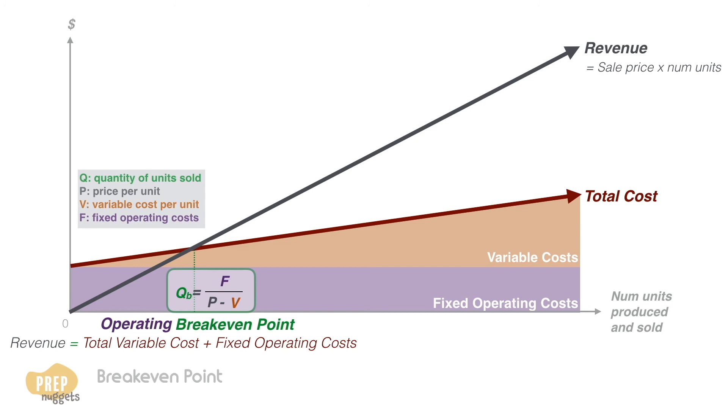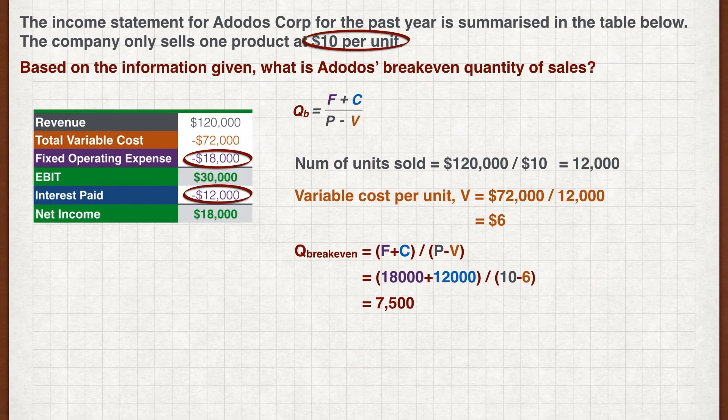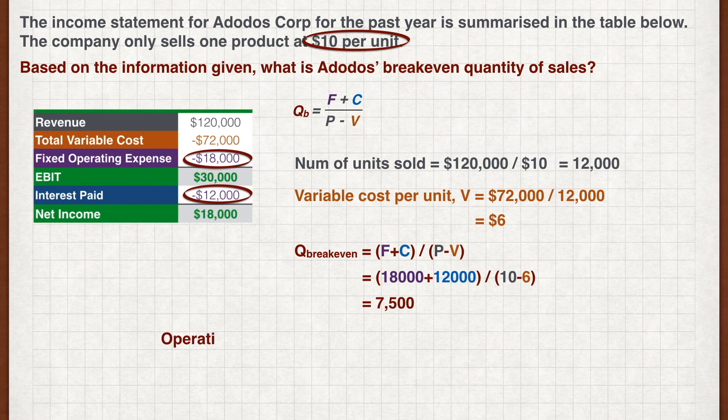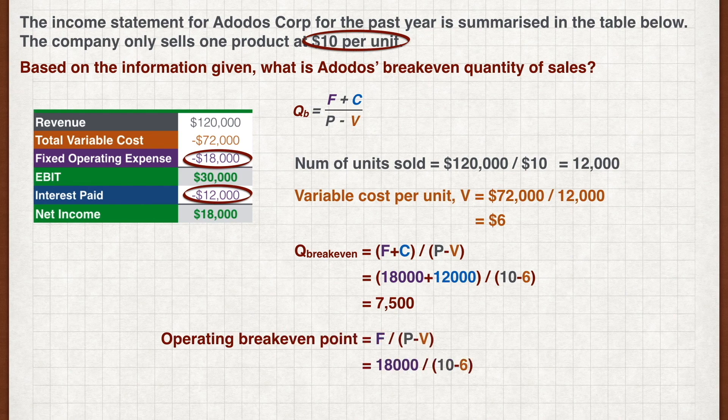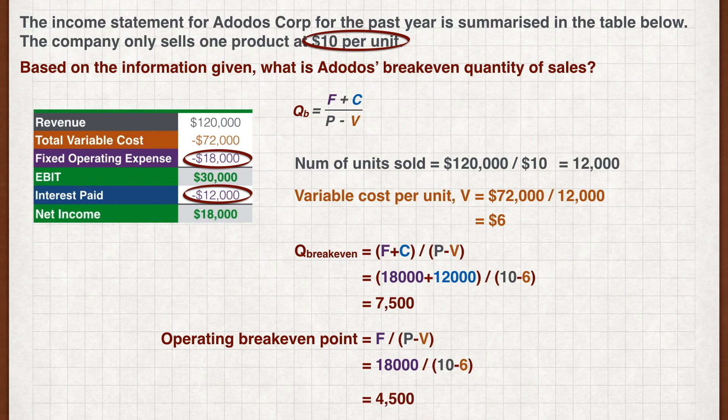So back to our last example, if we want to calculate the operating break-even point for Adodas Corp, we exclude the fixed financing costs and get an answer of 4,500 units.